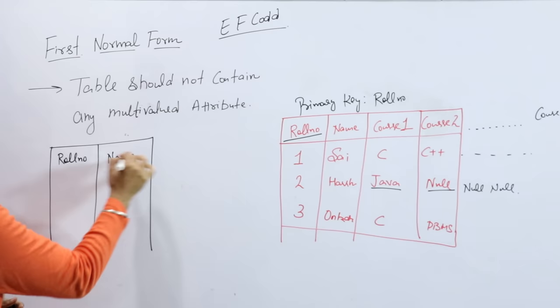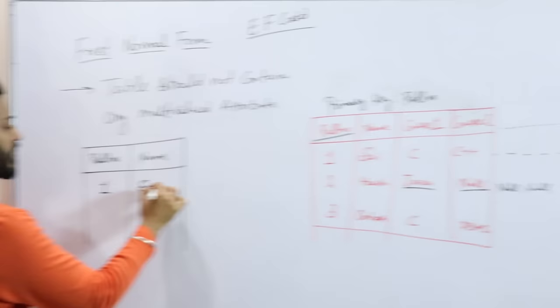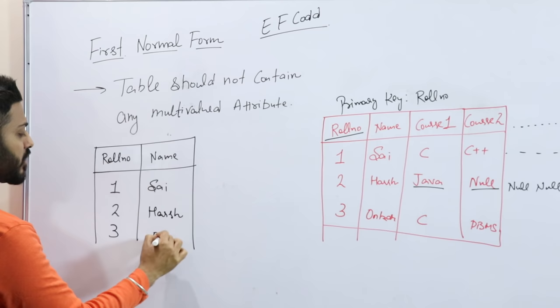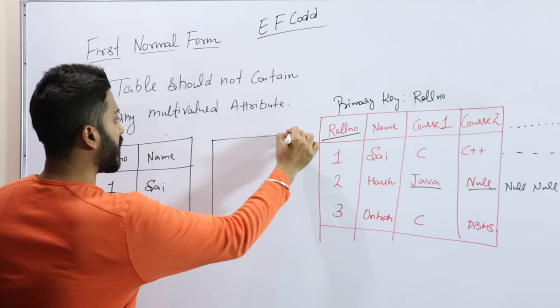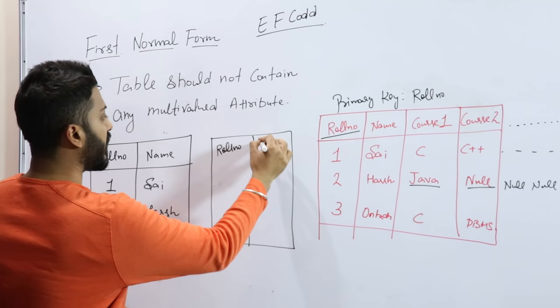Roll number one Sine, roll number two Harsh, roll number three Onkar. And there will be one referencing table or another table.